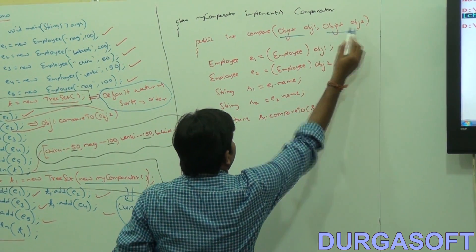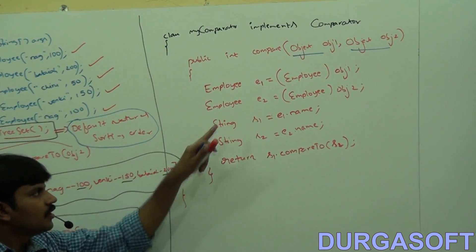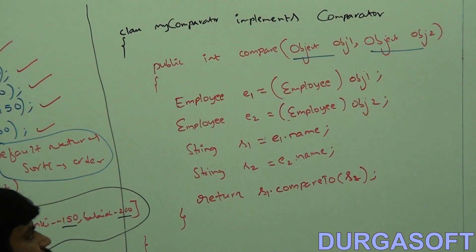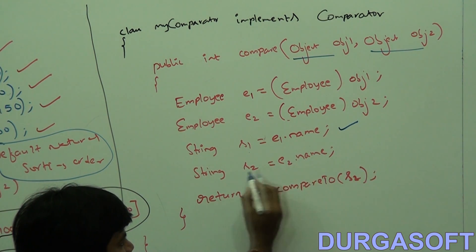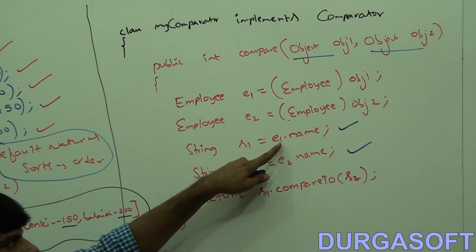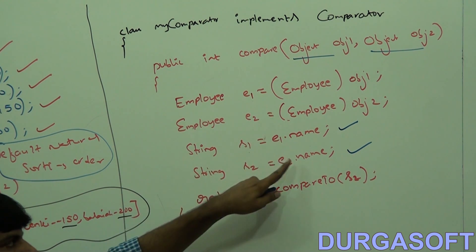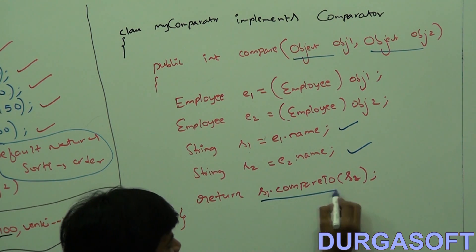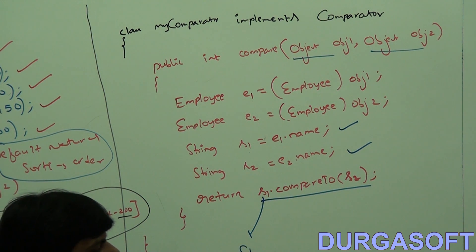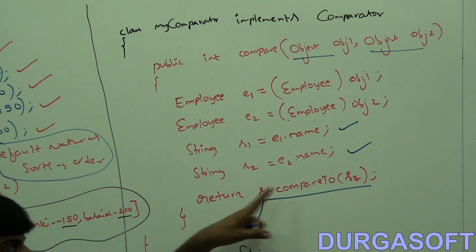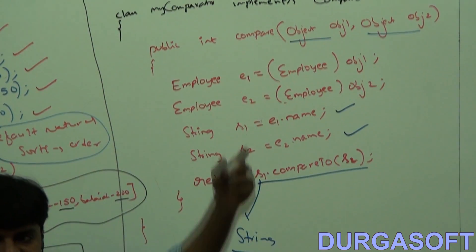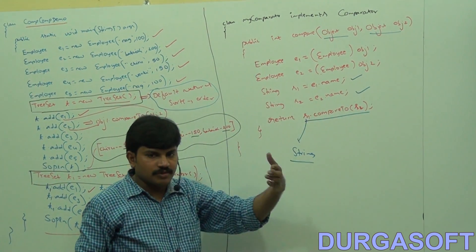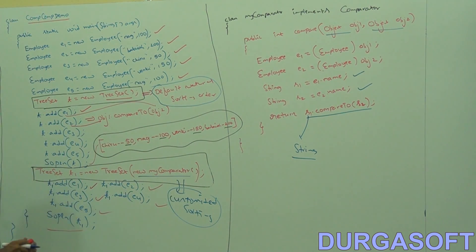Inside the compare method, we receive Employee objects as arguments. Employee E1 and E2 are the objects being compared. String S1 is E1.name, String S2 is E2.name. Then we return S1.compareTo(S2). Since S1 is a String object, the String class compareTo method is implemented based on alphabetical order.